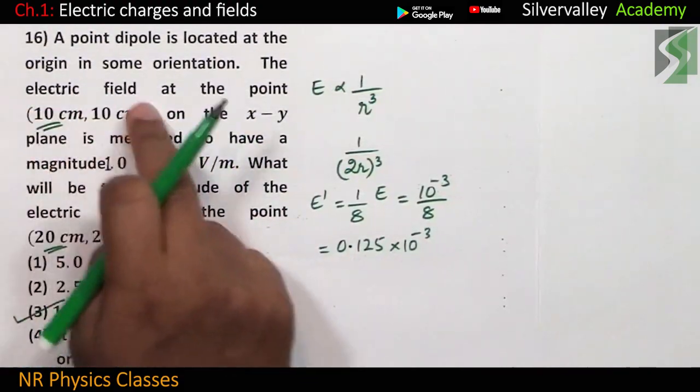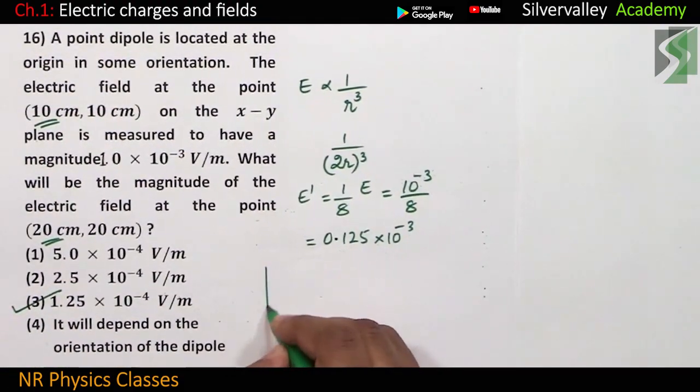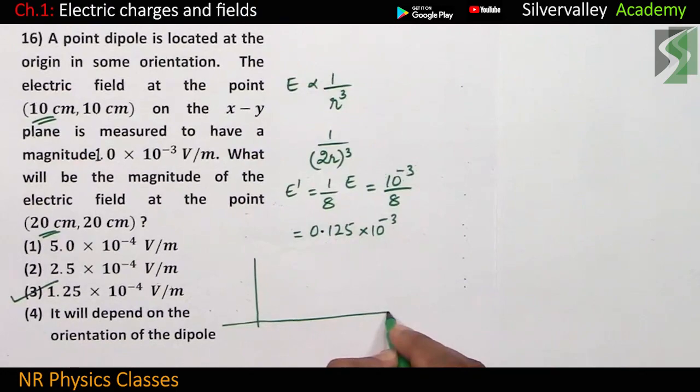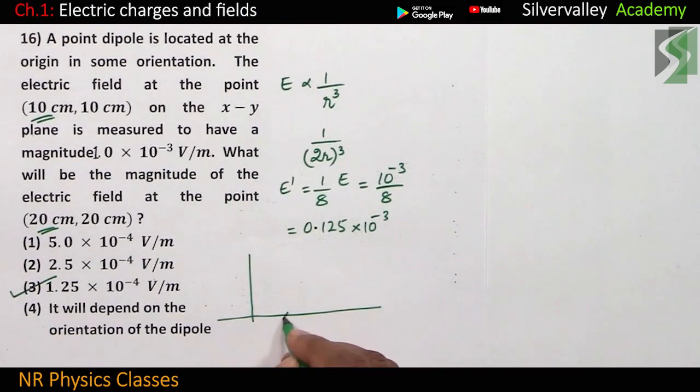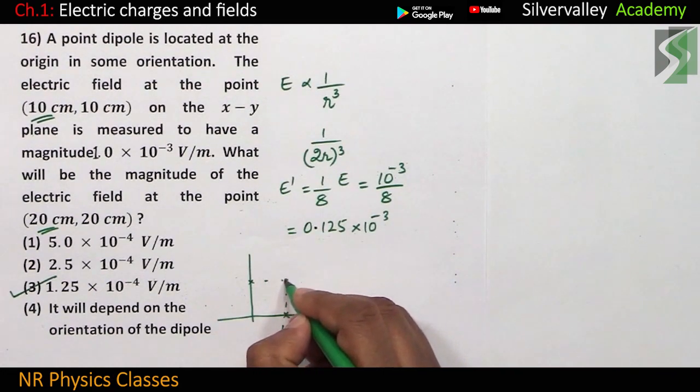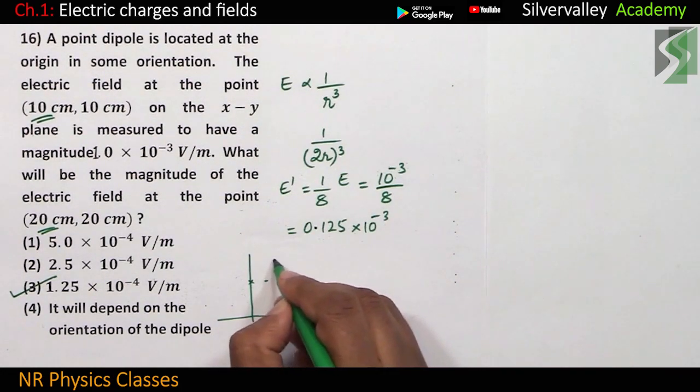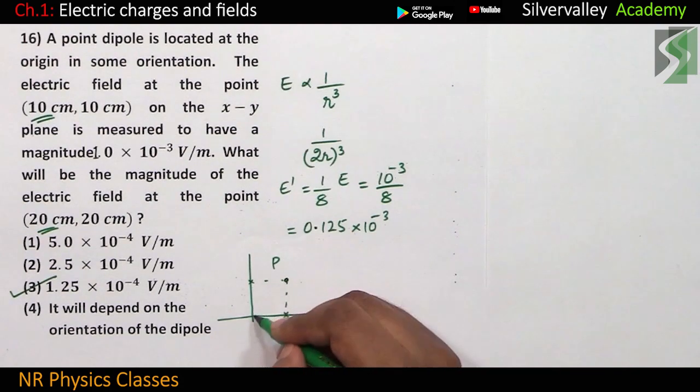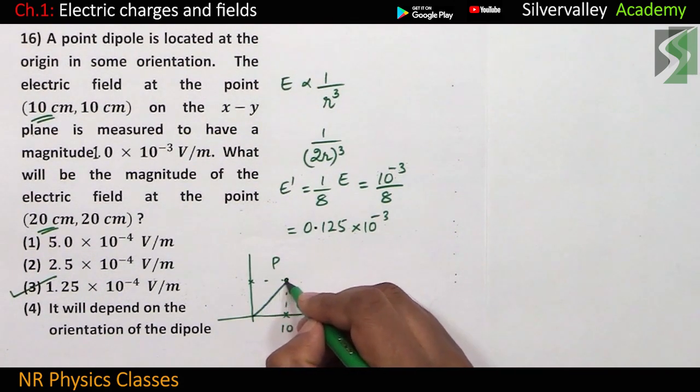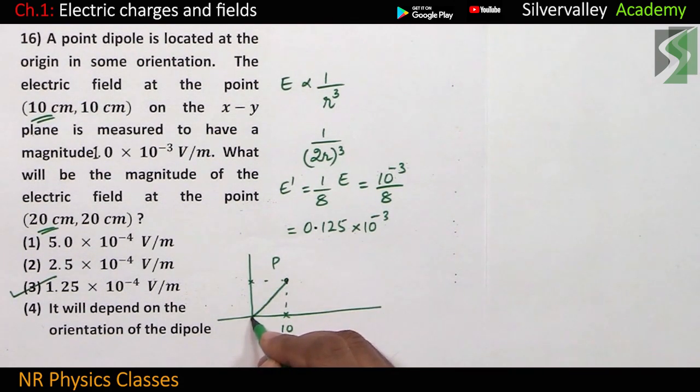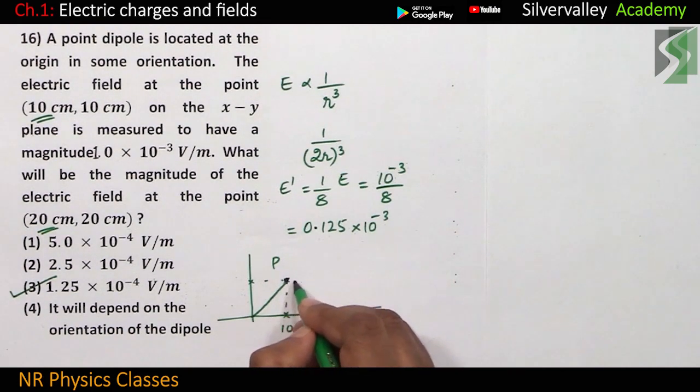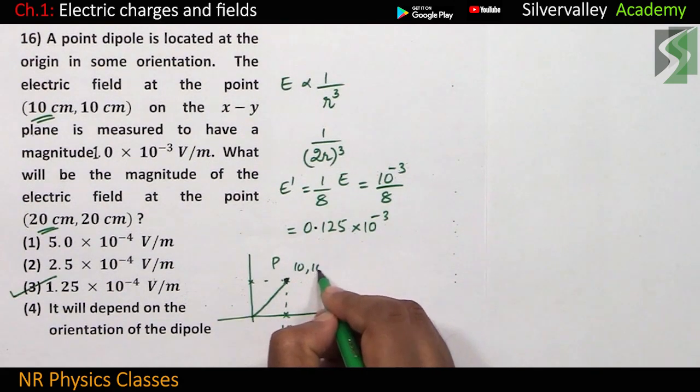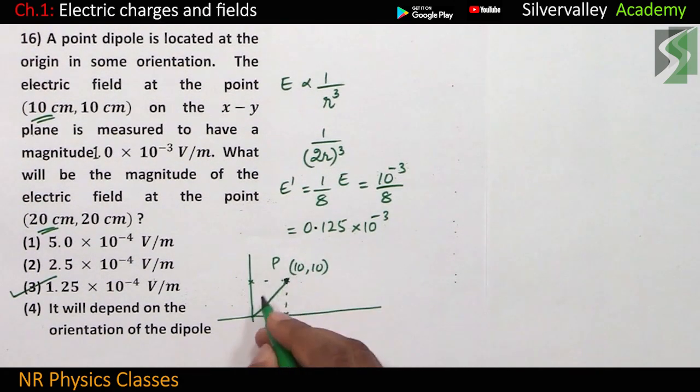Now understand this a little bit. If this is the coordinate axis 10 comma 10, here is the point p. Okay. Distance of point p from the origin is 10 root 2.